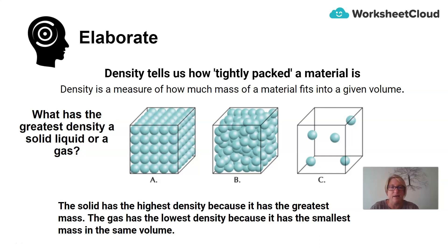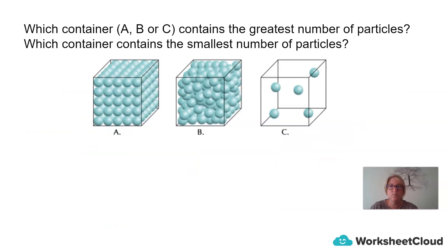Since the solid has the greatest number of particles, it is going to have the greatest mass. The gas is going to have the lowest density because it has the smallest mass in the same volume. It has the smallest number of particles that occupy the same volume.